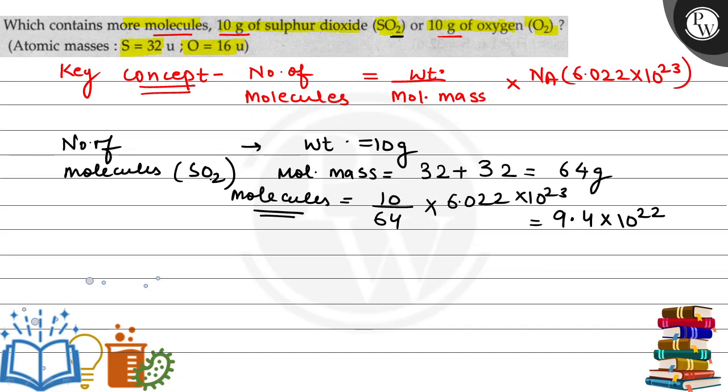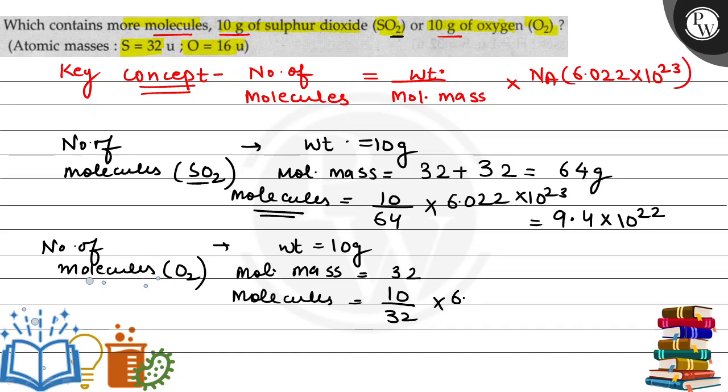These are the number of molecules for sulfur dioxide. Next, number of molecules for O2. Given weight is the same, 10 grams. Molecular mass equals 16 multiplied by 2, which is 32. Number of molecules will be 10 divided by 32 multiplied by Avogadro's number,